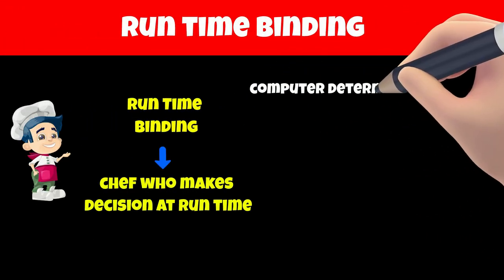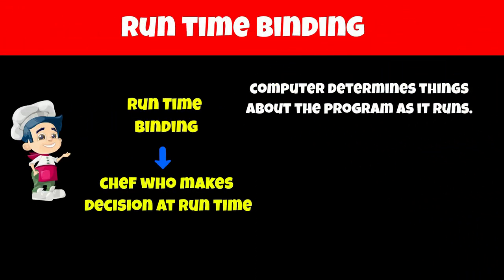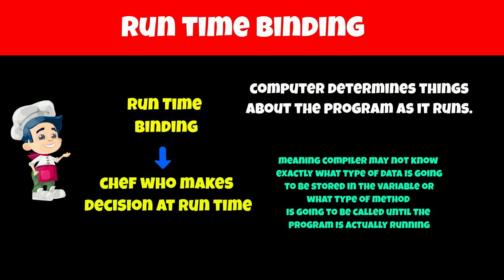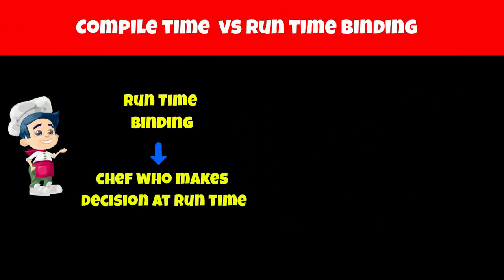Runtime binding is when the computer determines things about the program as it runs. This means the program determines the type of variable or method at run time, meaning the compiler may not know exactly what type of data is going to be stored in a variable or what type of method is going to be called until the program is actually running. So run time binding is like a chef adapting dishes based on customer requests.